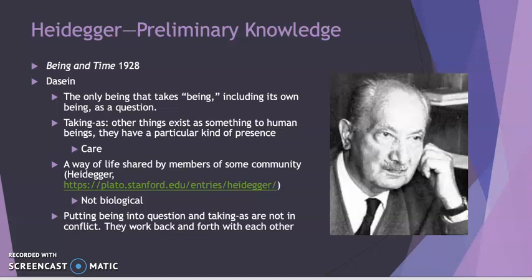Another aspect of Dasein is the taking-as structure. For us, other things exist as something to human beings. The rock is a rock — we take it as something; it has a particular kind of presence. A small rock is something we take as a thing we can skip across the water, whereas a large rock might be something that is in the way of mowing the yard. Part of this deals with an essential feature of the being of Dasein, which is to care. We have projects in the world that we care about, and objects appear to us — they are taken as something in relationship to our care about those projects.